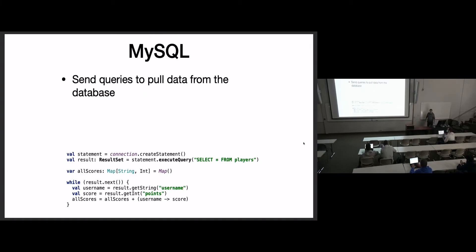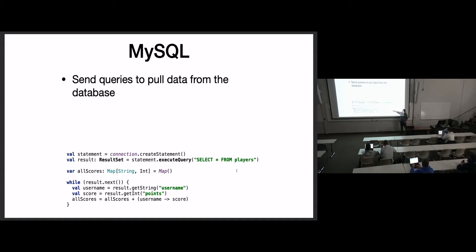When we want to pull information, we use the SELECT statement. 'SELECT *' — the wildcard — just says give me everything from some table. That's going to give us all the information we want. Depending on your language, you get the information returned in different ways. In Scala, it returns a result set that we can iterate over, pull all the information out of, and then process however we want.